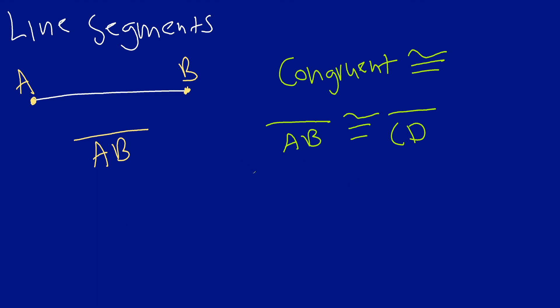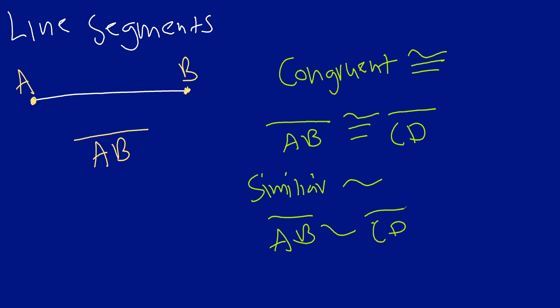Another term we often use is similar. The symbol for similar is a little wavy line above the equal sign. Similar means the same shape but different sizes. So if I say line segment AB is similar to CD, I'm telling you they are the same shape but might be different lengths. And of course, the equal sign means same value, which you're likely already familiar with.